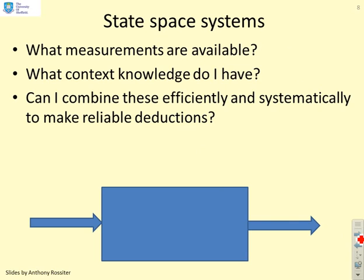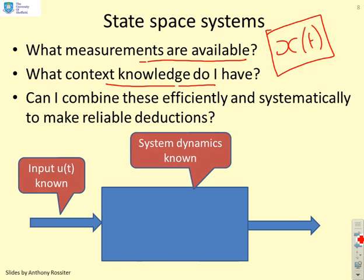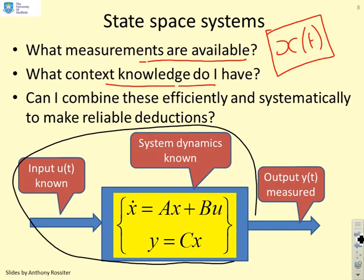For state-based systems: first, what measurements can I make? What context knowledge do I have? Can I combine these efficiently and systematically to make reliable deductions? What I'm trying to find out is the state x of t. We cannot measure x of t directly; we can measure something else, and we want to infer x of t from available measurements. I know the input, I assume I know the system dynamics — x_dot equals Ax plus Bu, y equals Cx — and I can measure the output. The input and system dynamics are the context knowledge, and the measurement is the output.